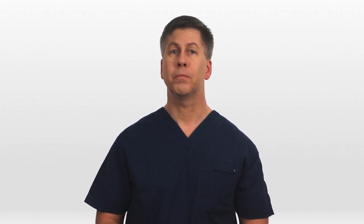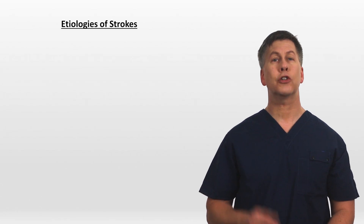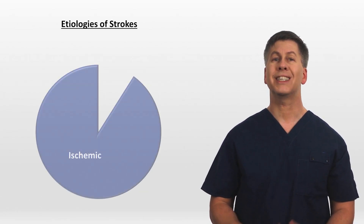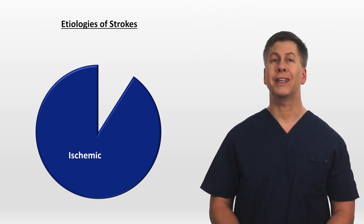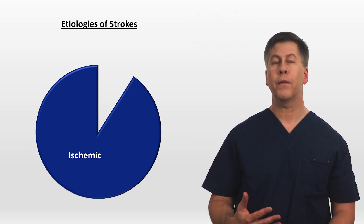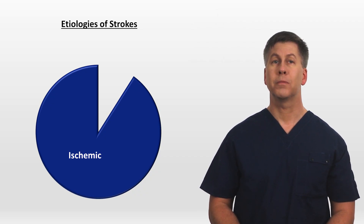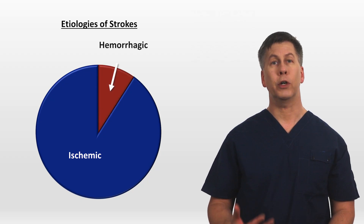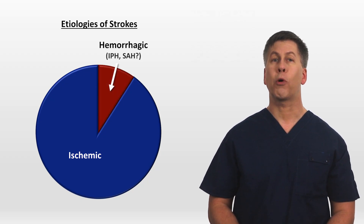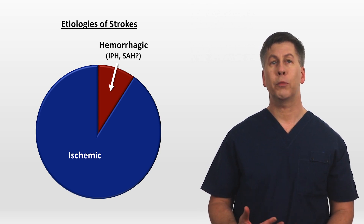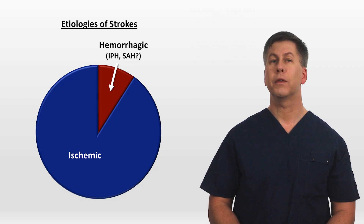With that caveat out of the way, let's start with the etiologies of stroke, which will help to understand the workup and small differences in treatment. Stroke as it's conventionally defined has two major subtypes. The majority are ischemic strokes, in which there is an interruption to the normal blood flow to part of the brain, resulting in infarction of neurons, a process which begins within minutes. A minority of strokes are caused by hemorrhage, which can either be intraparenchymal hemorrhage or subarachnoid hemorrhage, although some physicians don't consider subarachnoid hemorrhage to be a form of stroke, strictly speaking.